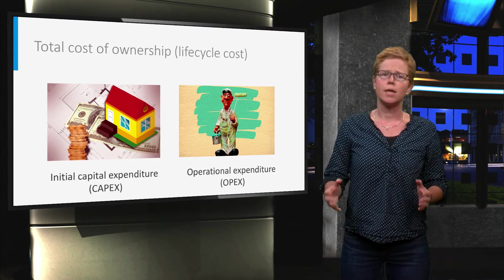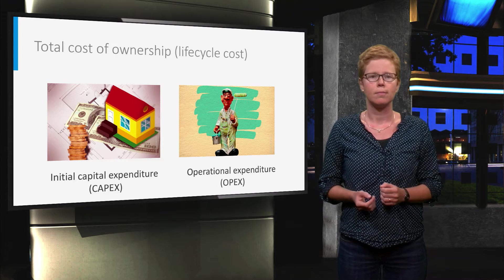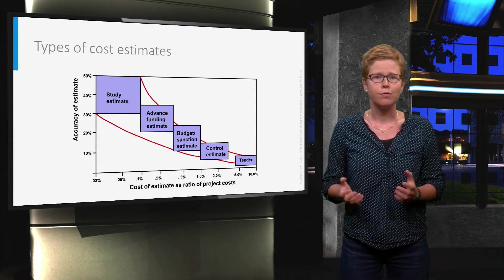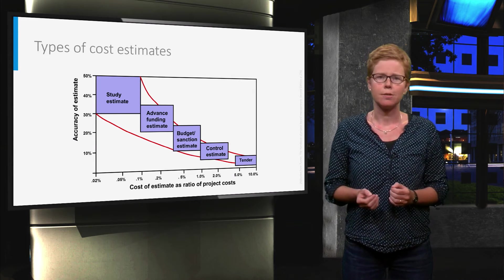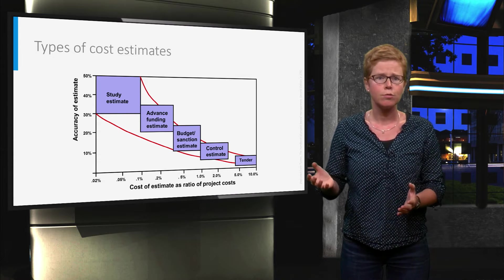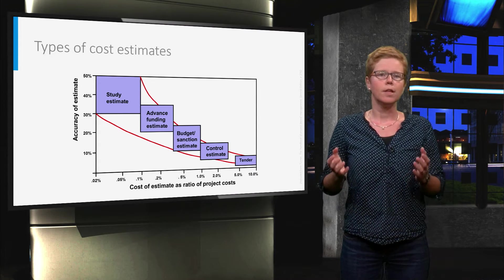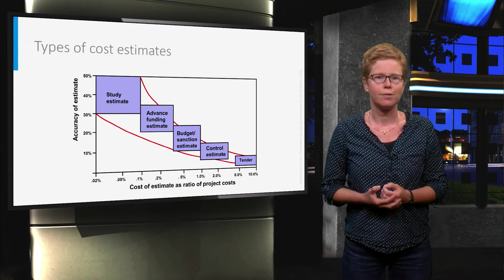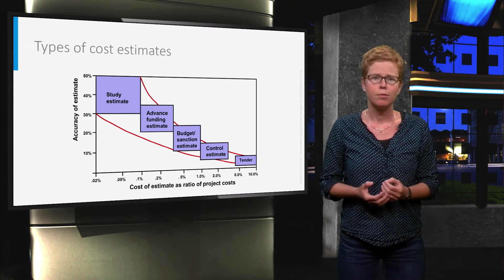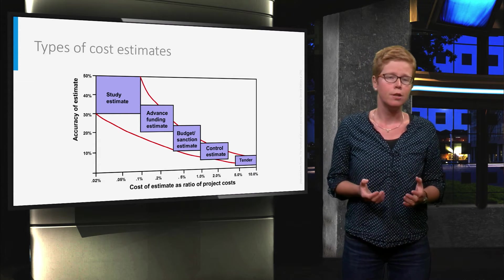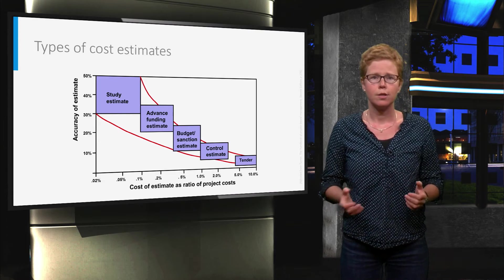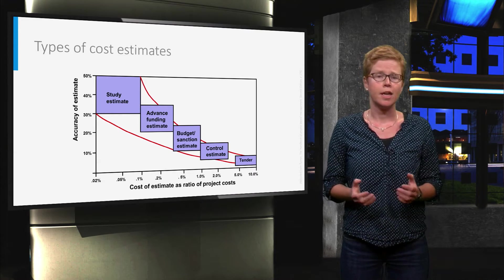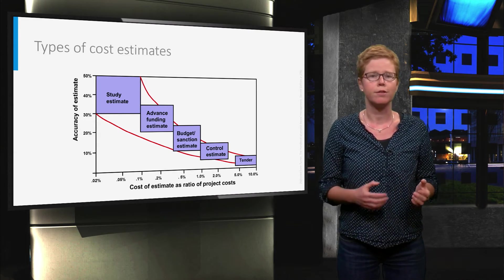Let's go back to the capital investment now. Cost estimates evolve during the early project phases. The level of detail grows along the route. There are different types of cost estimates. In the study estimate, for example a feasibility study, you are looking at the areas of work as the lowest detail, and accuracy varies between 30 and 50 percent.